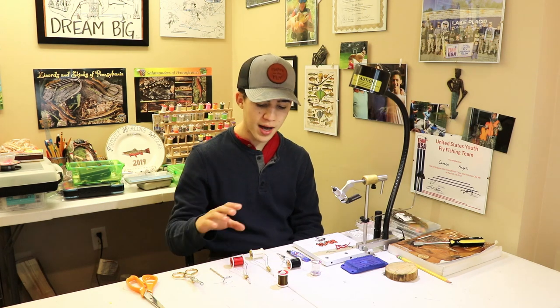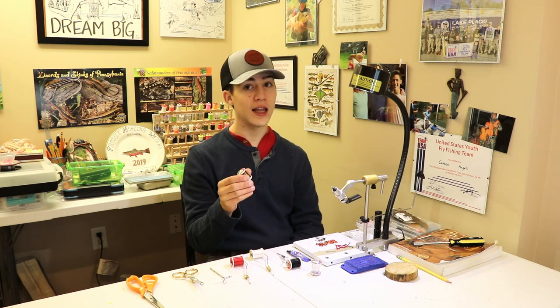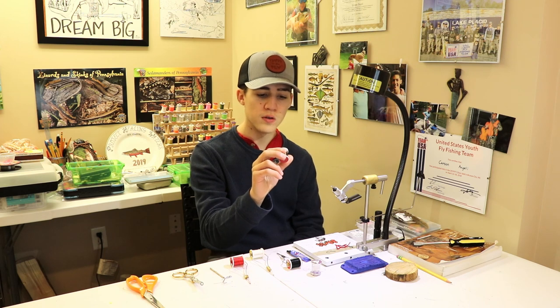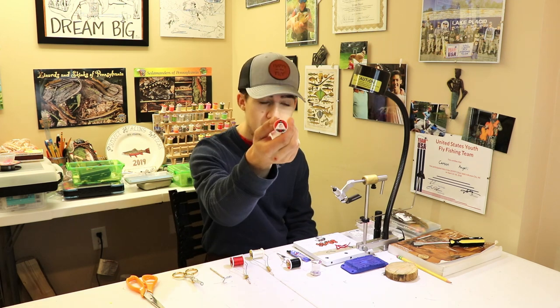Also just to keep in mind too you can use different colors. Another color that I like for this zebra midge is a brown olive thread, ultra thread 70 odd.